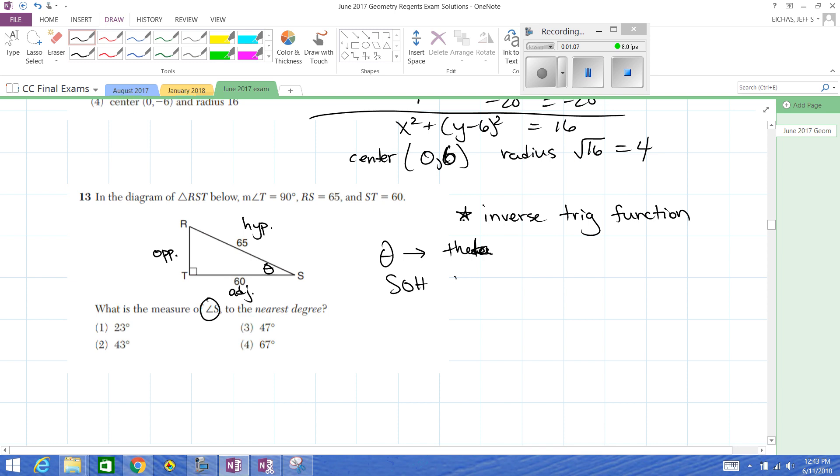I still use my acronym. I still do everything the same way to start with. And then I'm going to choose cosine. Cosine of theta, or angle S, is going to be adjacent over hypotenuse.